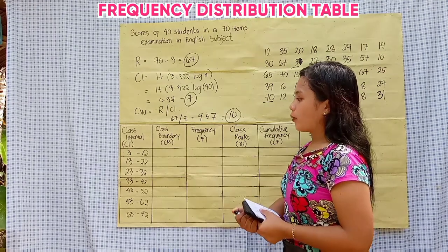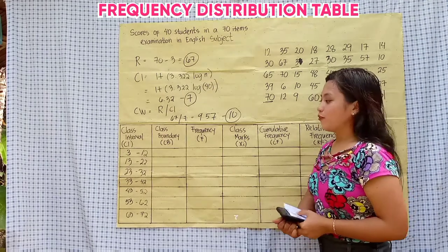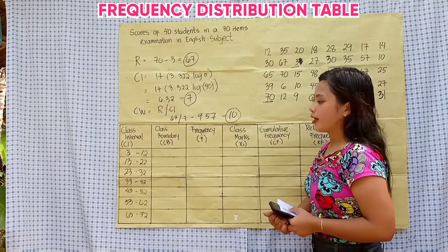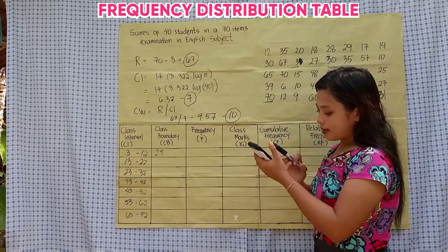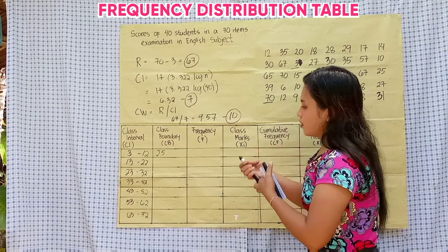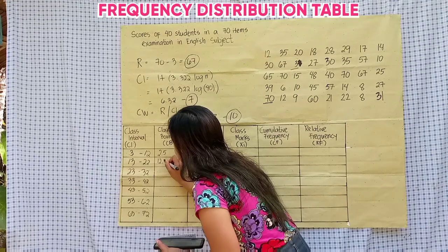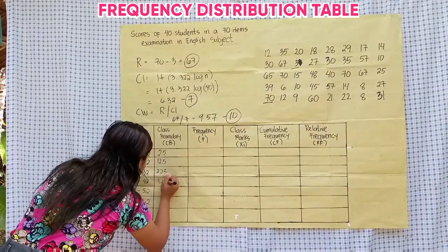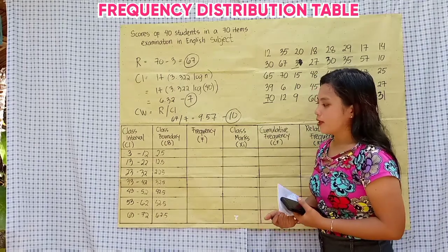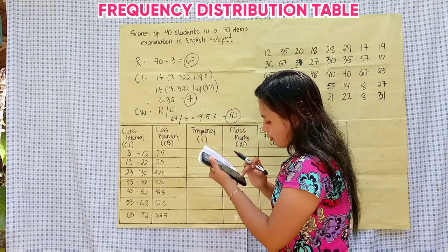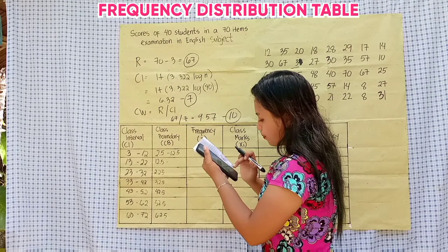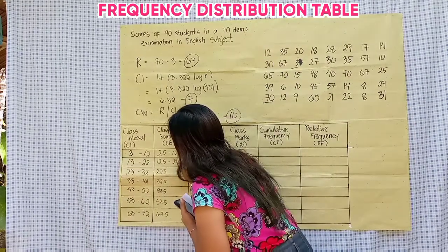Next, let's proceed to the class boundary. To find the class boundary, we need to subtract 0.5 from our lower class limit and add 0.5 to our upper class limit. So 3 minus 0.5 is 2.5, 13 minus 0.5 is 12.5, and so on and so forth for the lower boundaries. For the upper boundaries, we add 0.5 to each upper class limit, and so on and so forth.